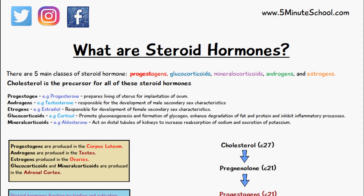In today's video we're going to be talking about steroid hormones. There are five main classes of steroid hormones including progestogens, glucocorticoids, mineral corticoids, androgens, and estrogens. Cholesterol is the precursor for all of these steroid hormones.